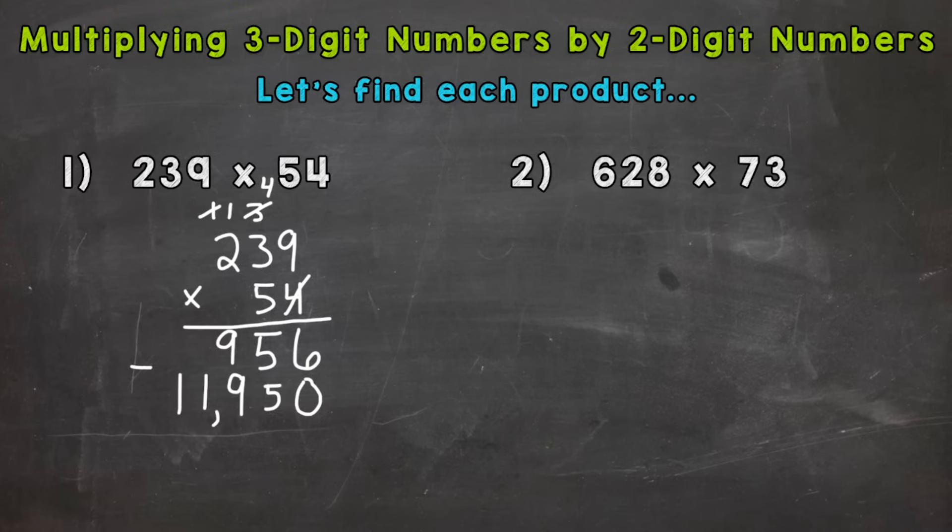Now we can add these two numbers together. These are called our partial products and it makes sense because they are part of the final product or answer. So six plus zero is six, five plus five is 10. One plus nine is 10 plus nine is 19. One plus one is two. And we just have a one there that we can drop down and we get a final answer of 12,906. So on to number two.